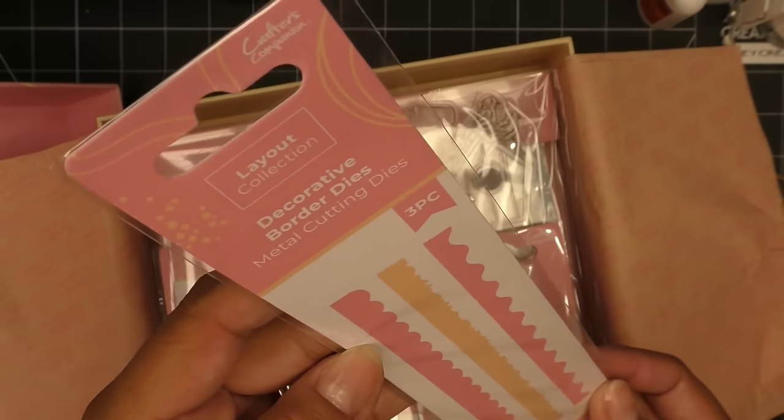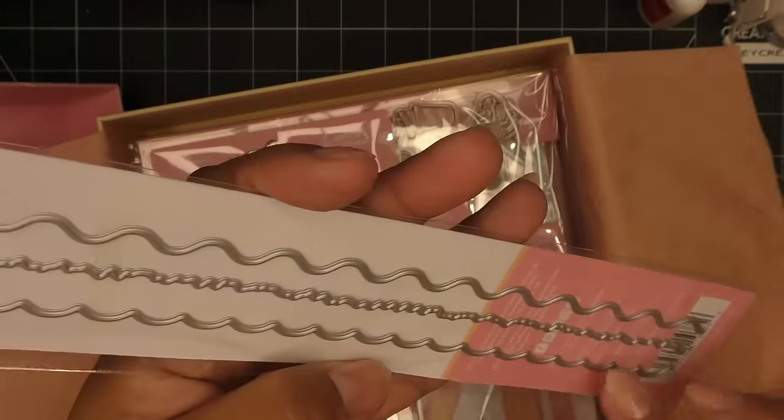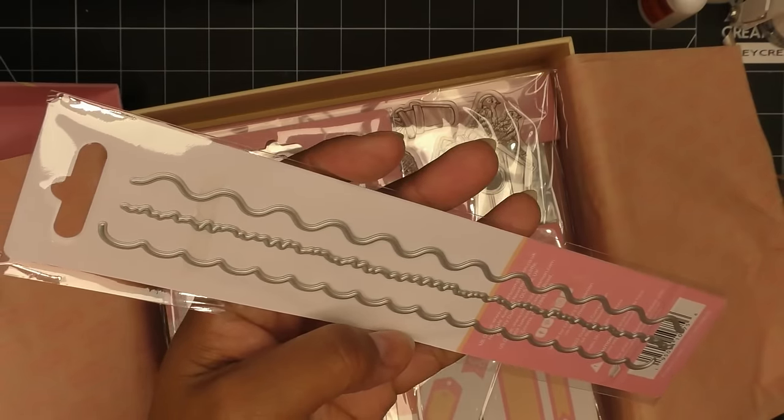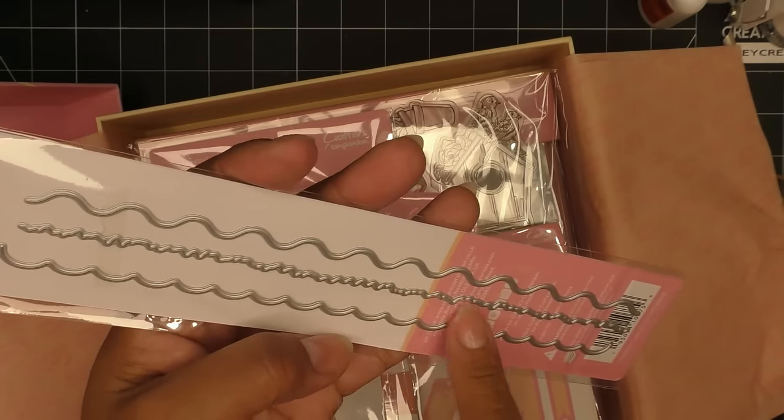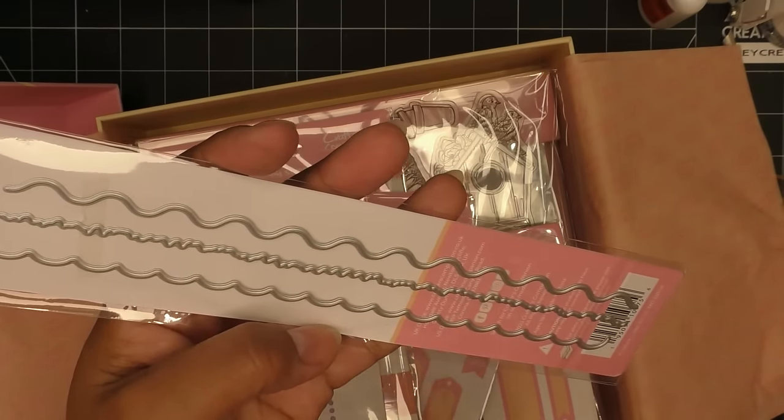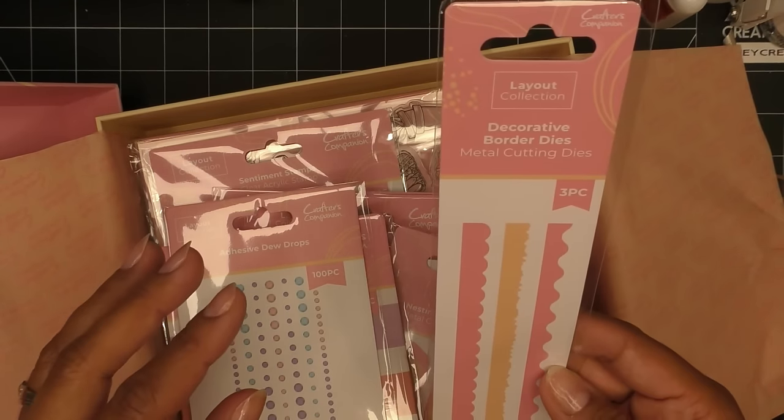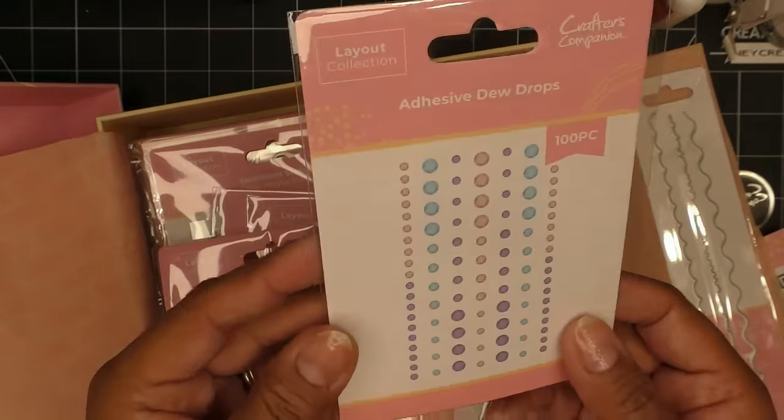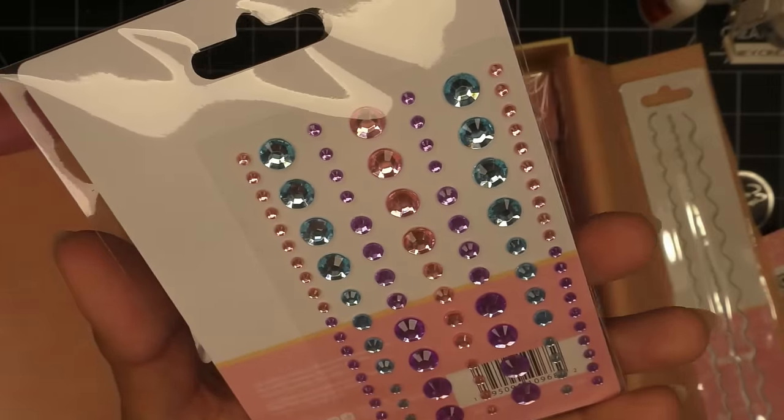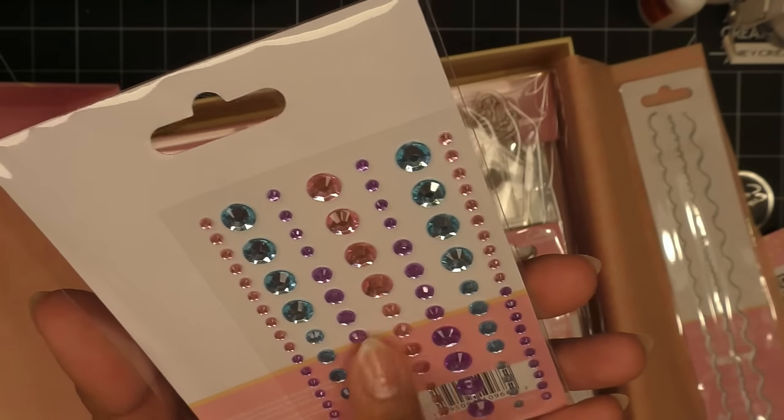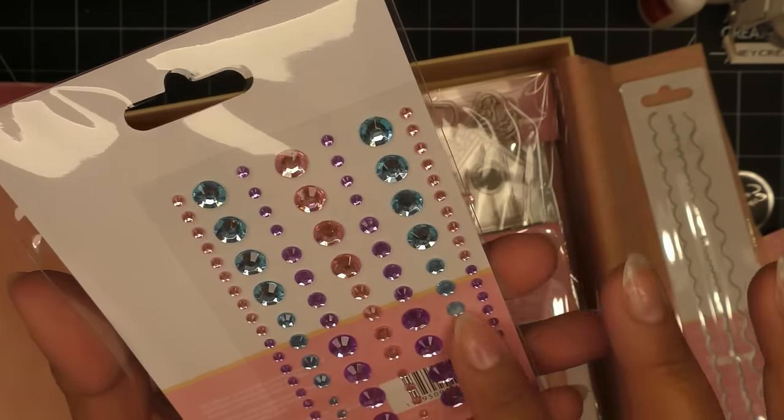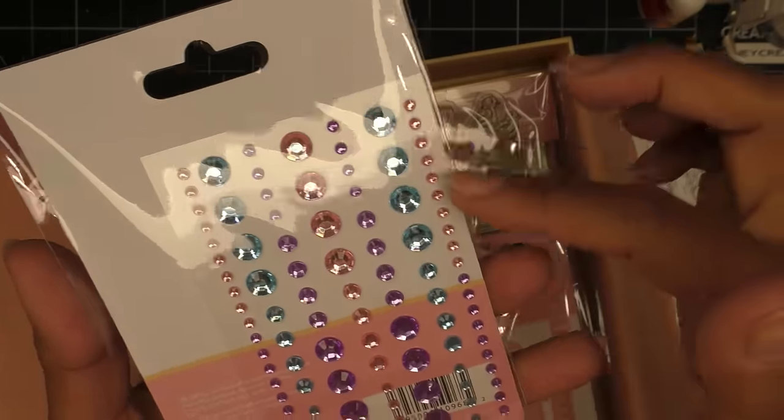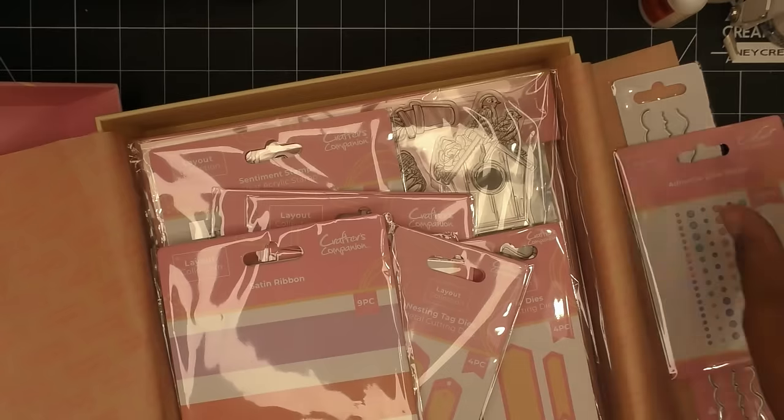Layout collection. So we have some decorative border dies, three of them. They're kind of just open-ended, just put them on the end of something. Might be very cute for rosette making, so you just put it on the edge. These are eight point one inches long. We have adhesive dew drops. I like the colorway, hopefully it goes through everything. It's very unicorny in my opinion, with the pink and the lavender, more purple, light blue there. Really cute.